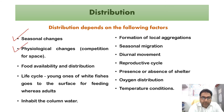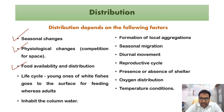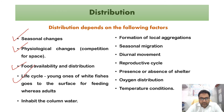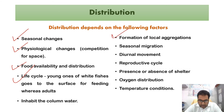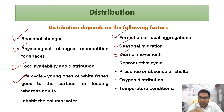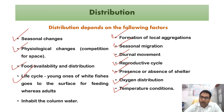Distribution is also influenced by the life cycle — for example, young whitefish go to the surface for feeding while adults return to the bottom. Many adults inhabit the water column. Nektons also form local aggregations, undergo seasonal migration, and show diurnal movement. Reproductive cycle, presence or absence of shelter, oxygen distribution, and temperature conditions also impact the distribution of nektonic organisms.